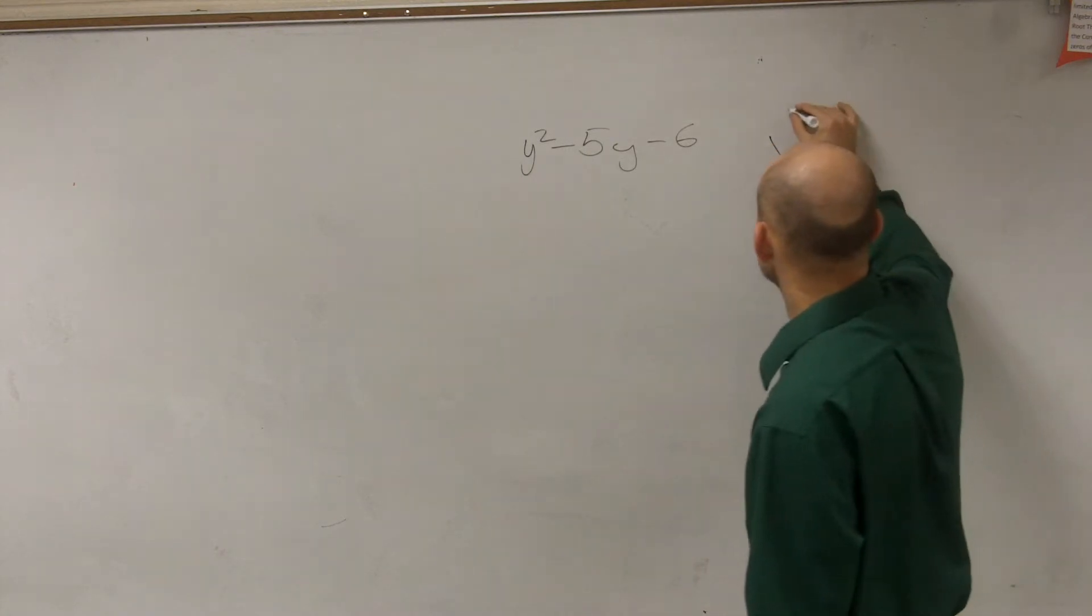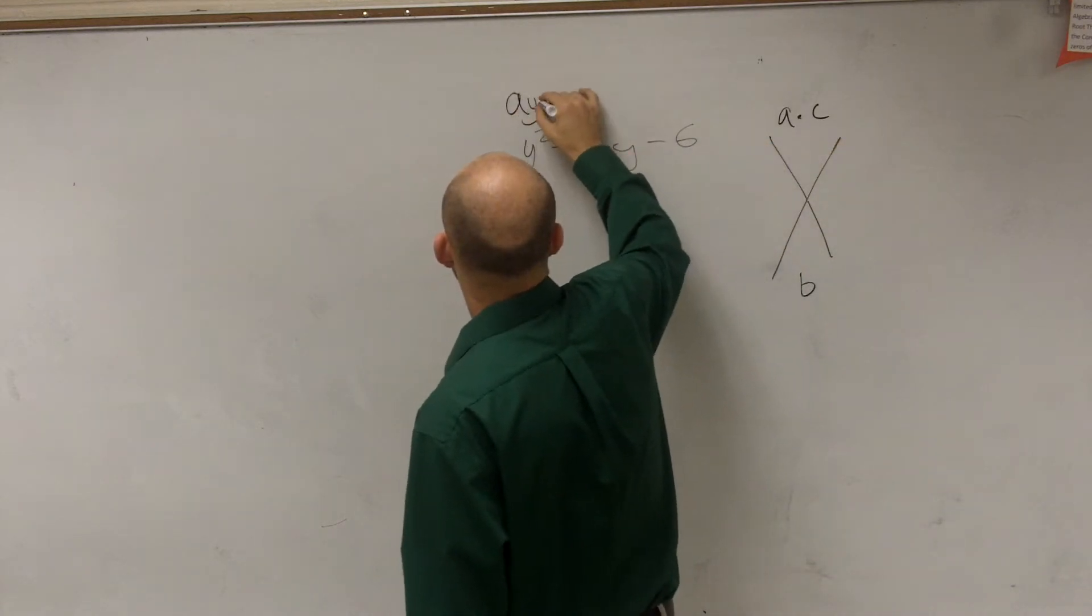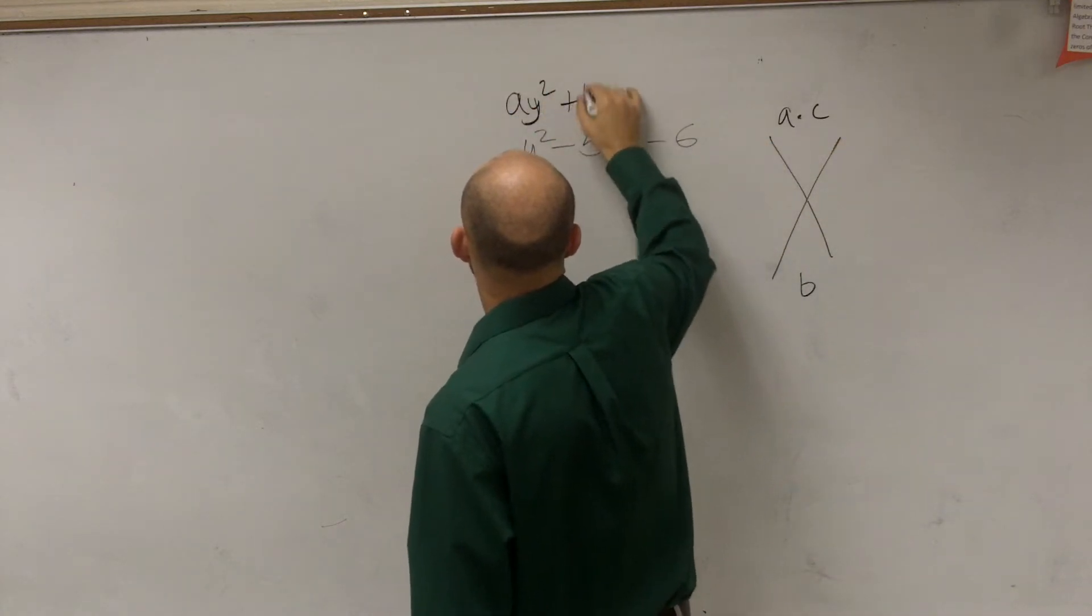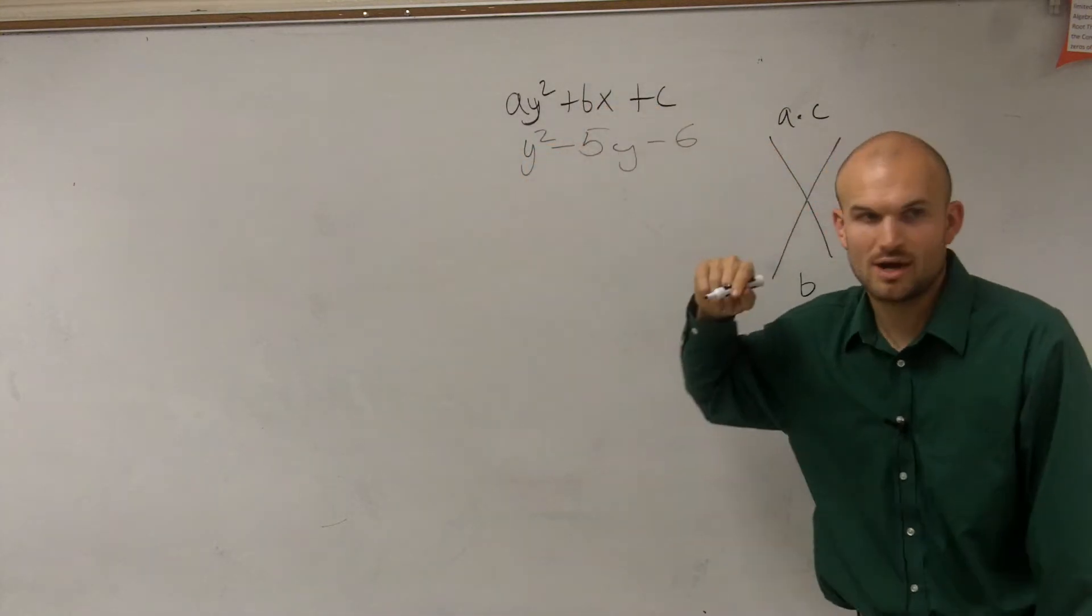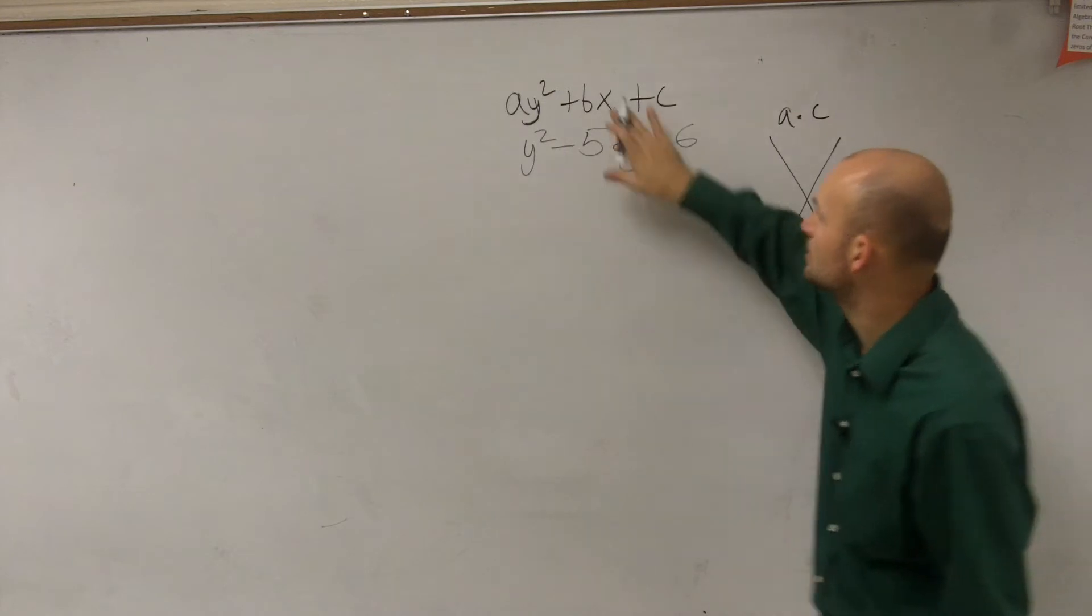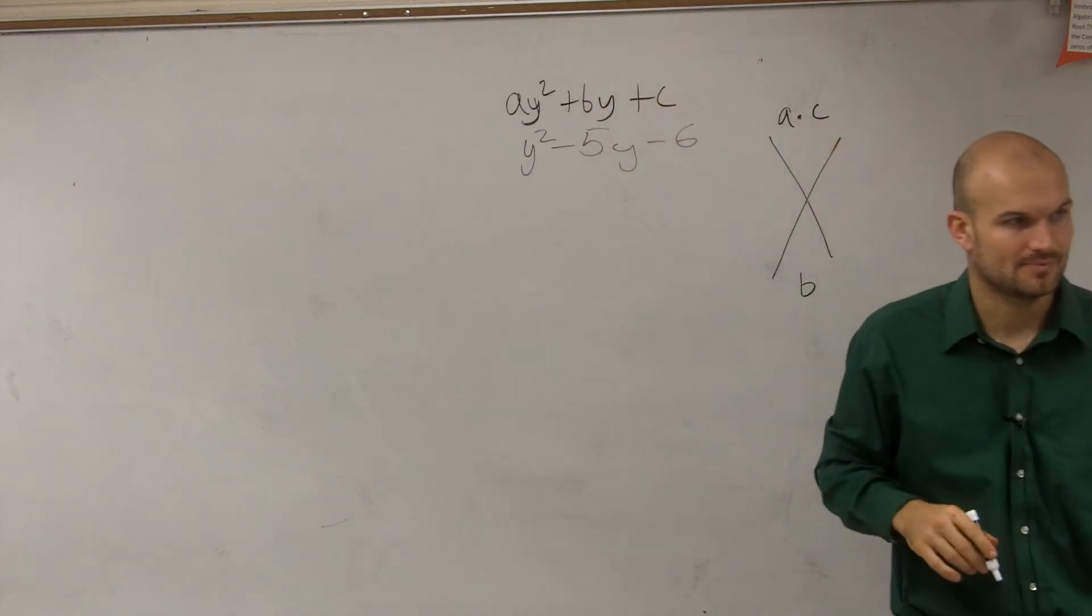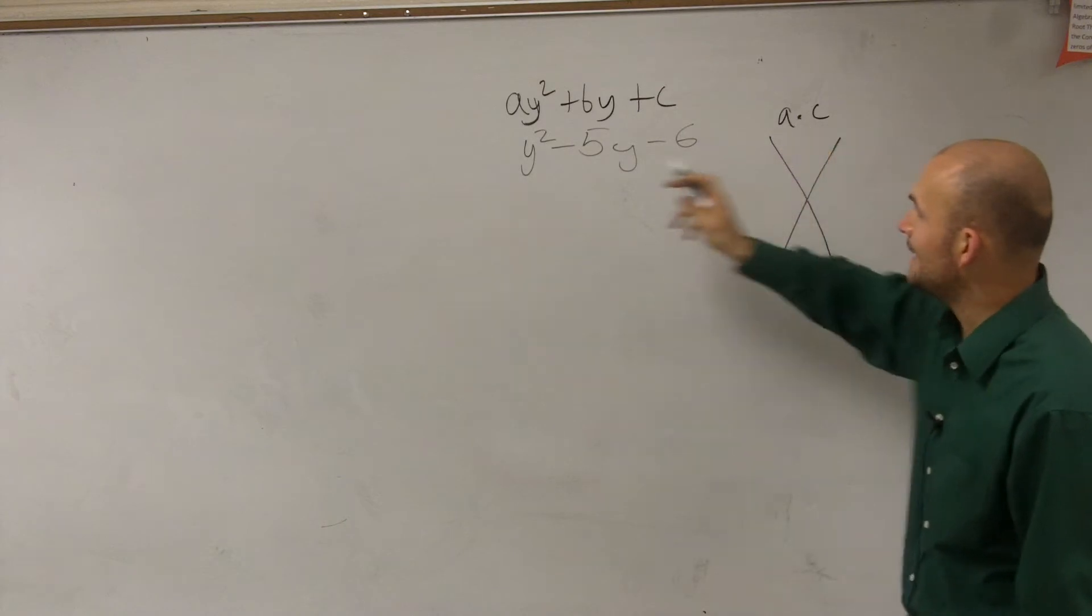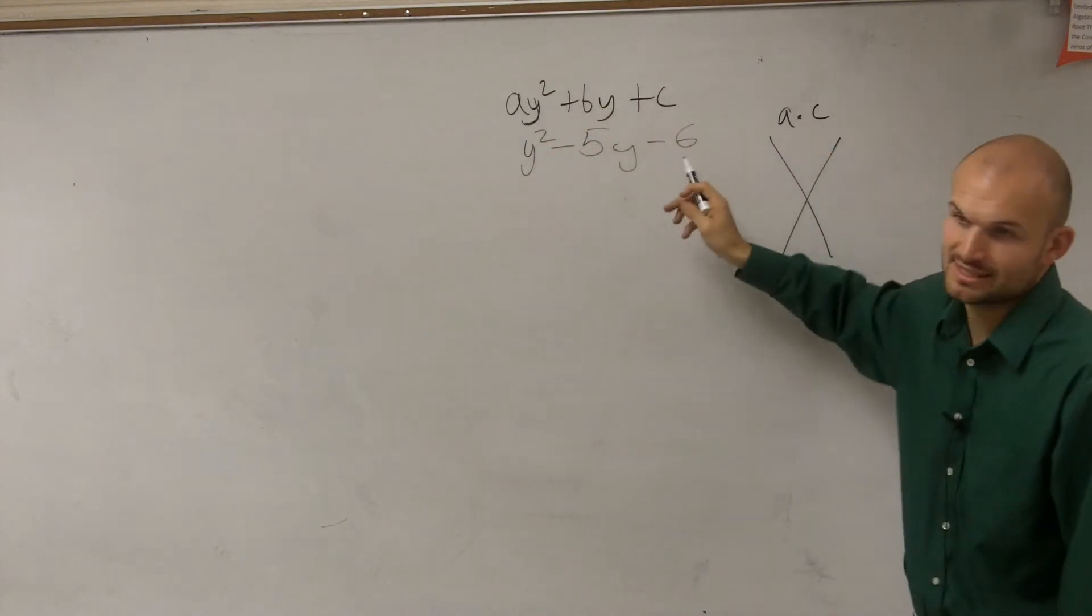So what the technique says is to do a times c and then put b on the bottom. So what is a, b, and c mean again? So remember we're talking about quadratics. All quadratics can be written in the form of ay squared plus by plus c. So therefore you could say a, in this case, is the coefficient of your square term, which is 1, and c is negative 6.